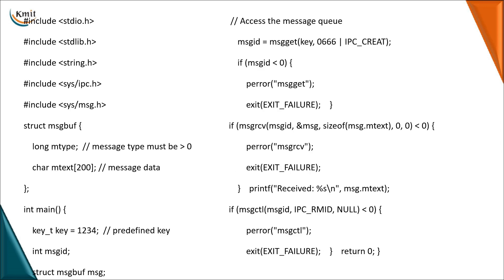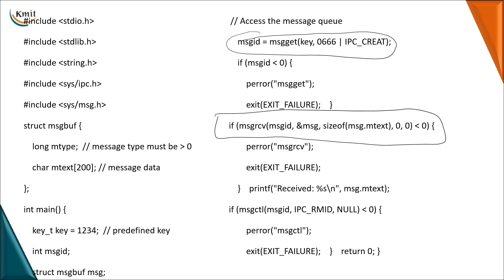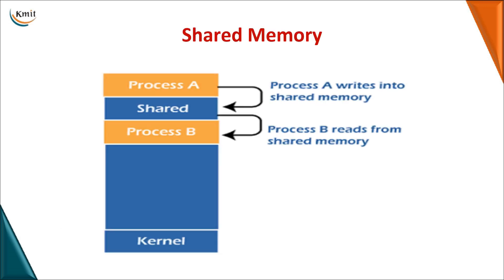On the receiver side, the same structure is used. The same key is used to obtain the queue ID with msgget. msgrcv is called with the queue ID, a pointer to the receive buffer, the size of the message text, the desired message type, and flag 0. If the return value is less than zero, it's a failure; otherwise the received message is printed to the monitor. After reading, msgctl with IPC_RMID is used to delete the queue since it is no longer needed.